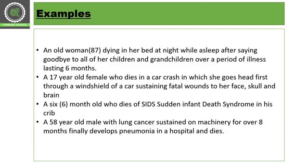Here we have some examples. An old woman aged 87 dying in bed at night while sleeping, after saying goodbye to all her children and grandchildren over a period of illness lasting six months — this is a natural type of death. A 17-year-old female who dies in a car crash, going head-first through a windshield and sustaining fatal wounds on her face, skull, and brain — this is an unnatural cause of death.